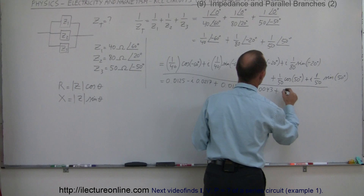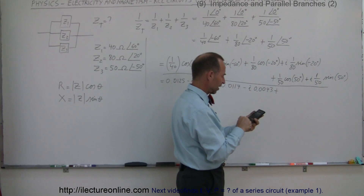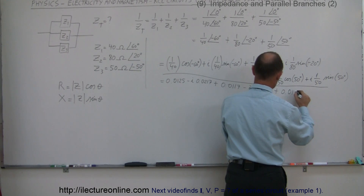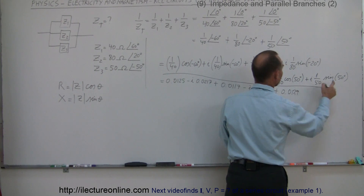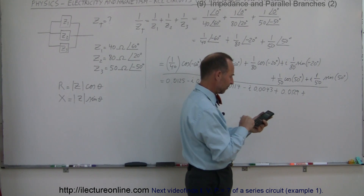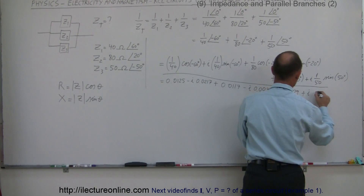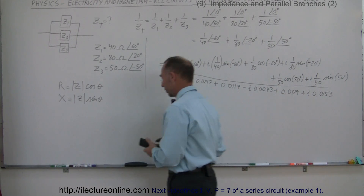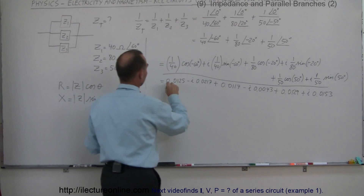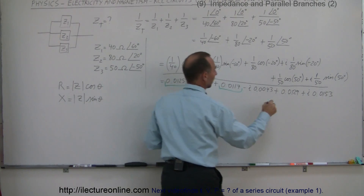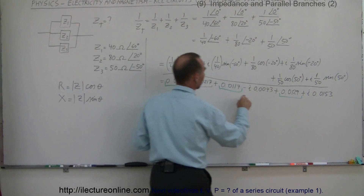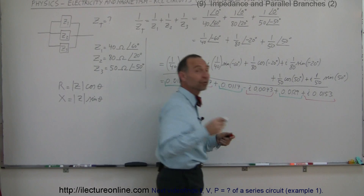For Z3: cosine of 50 degrees divided by 50 equals 0.0129, and sine of 50 degrees divided by 50 equals plus j times 0.0153. So we now have the real and imaginary parts of the inverse of all three impedances — we just need to add the real parts together and the imaginary parts together.